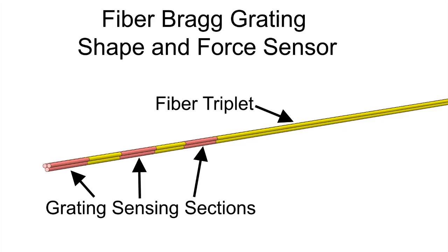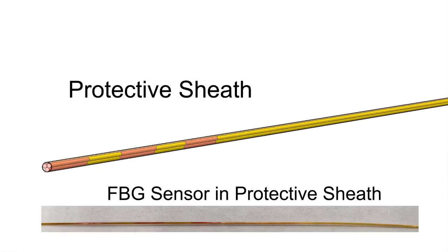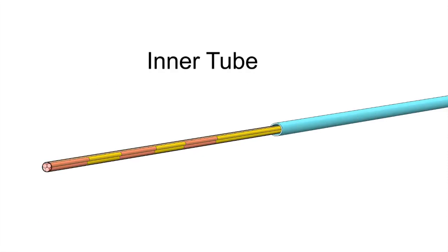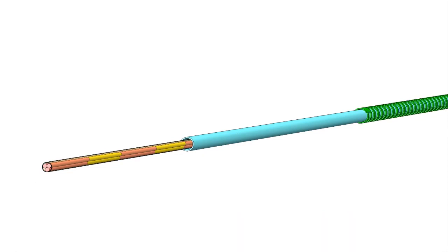The guidewire construction is as follows: An FBG triplet at the core is encapsulated by a protective sheath. This assembly is placed through a nitinol inner tube, which is then placed concentrically through the middle tube.